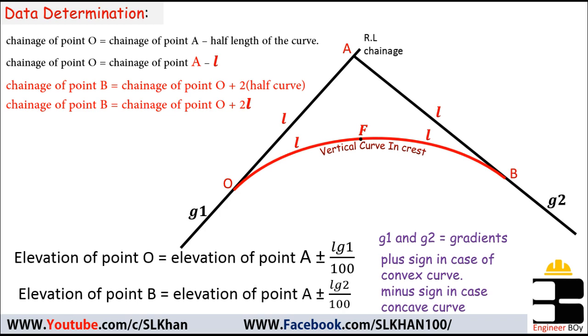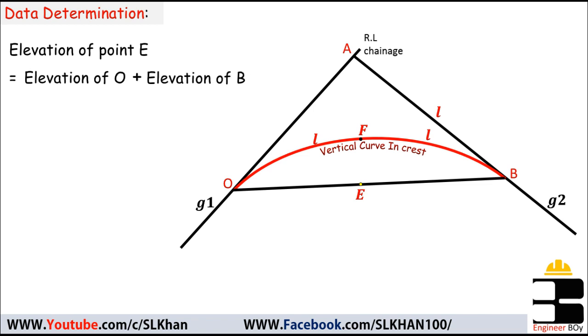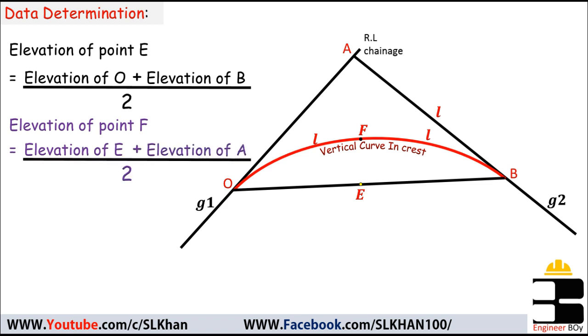If you join points B and O, you get point E, whose elevation can be found using an average formula. The elevation of point E equals the elevation of point O plus the elevation of point B, divided by two. Similarly, the elevation of curve center F is the elevation of point E plus the elevation of point A, divided by two. The distance AF equals the elevation of point A minus the elevation of F.